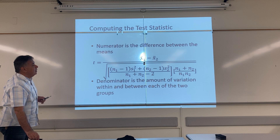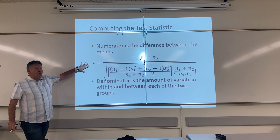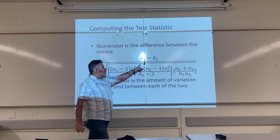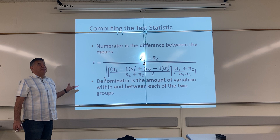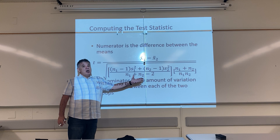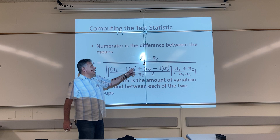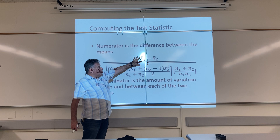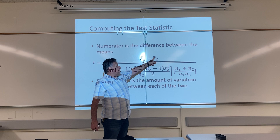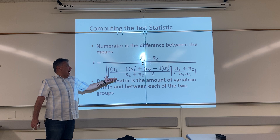Here is our formula. Let's take a look at t. This is a fraction, and underneath the fraction there's a giant square root symbol. Because we want to know if there's a difference between two groups, underneath the square root symbol we have two parts. Let me explain the numerator first. The numerator is the difference between the means of the two groups. This is x-bar one — the average of our first group, the mean of the first group. And this is x-bar two — the mean or average of the second group.